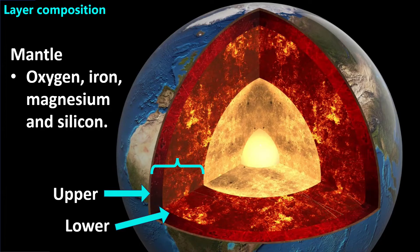The mantle is mostly made of oxygen, silicon, magnesium, and iron. It is solid rock, but can be deformed, so over the course of millions of years, it moves.